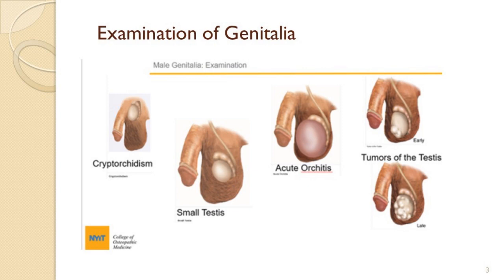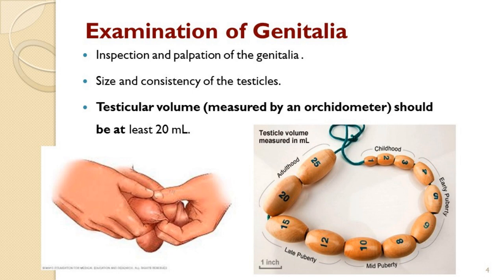Genital palpation is done for the presence of any tenderness, consistency assessment, and any swelling in the testicular area, and to assess the exact size and volume of the testes. Testicular volume is assessed in comparison with an orchidometer. The ideal volume of the testes is approximately 15 to 20 ml, and if there is reduction in size, one must suspect either chronic infection of the genital tract, atrophic changes, or chromosomal abnormalities.